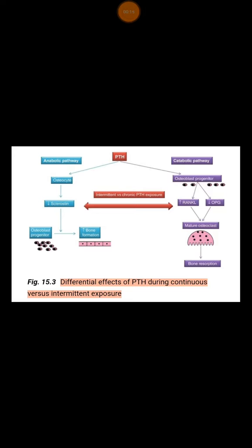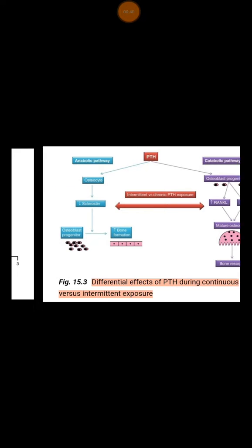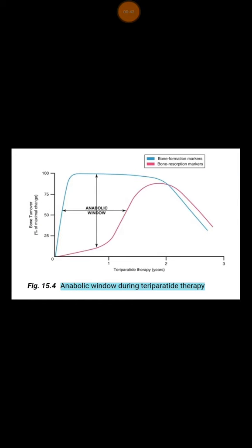This means it will enhance bone formation. But if parathyroid hormone is given continuously, then it will give you a catabolic effect, which means increased bone resorption. Understanding this concept is very important when it comes to the drug which we use to treat osteoporosis.